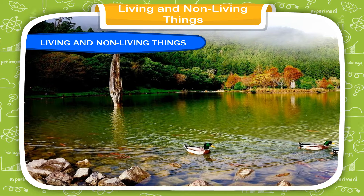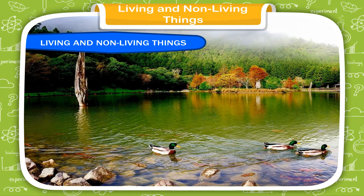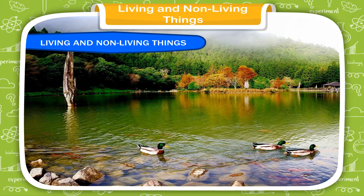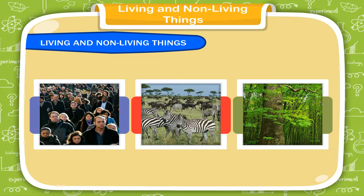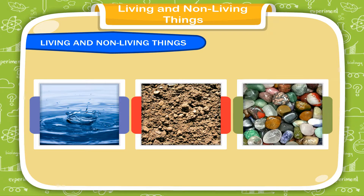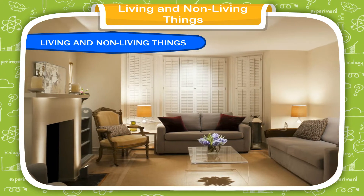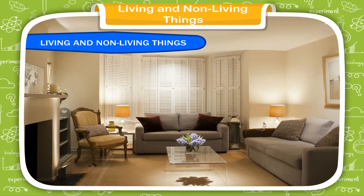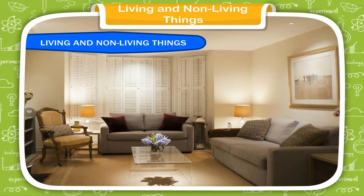Natural things and man-made things are the two types of things found in our world. Natural things include living things and some non-living things. Things such as humans, animals and plants that have life are known as living things. Things such as water, mud, stones, etc. which have no life are known as non-living things.